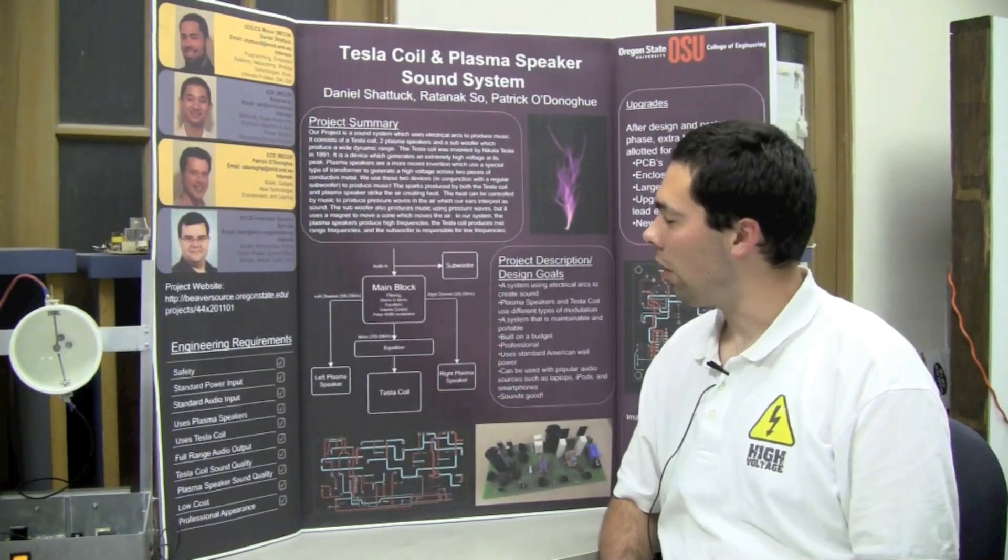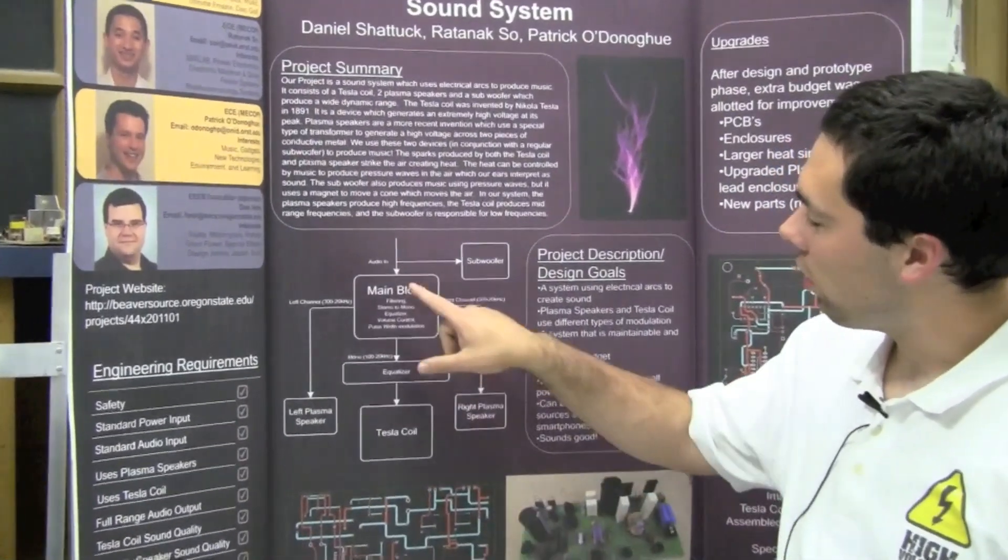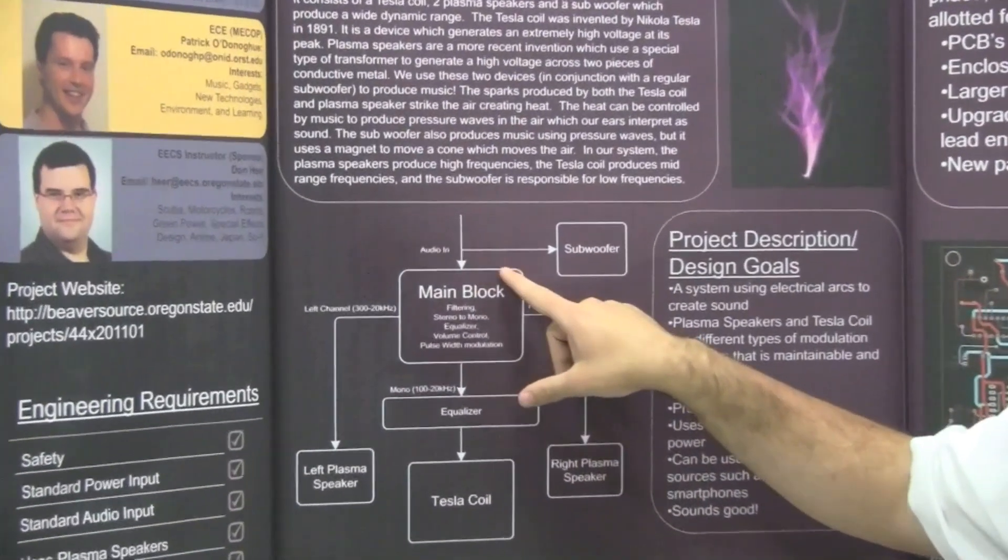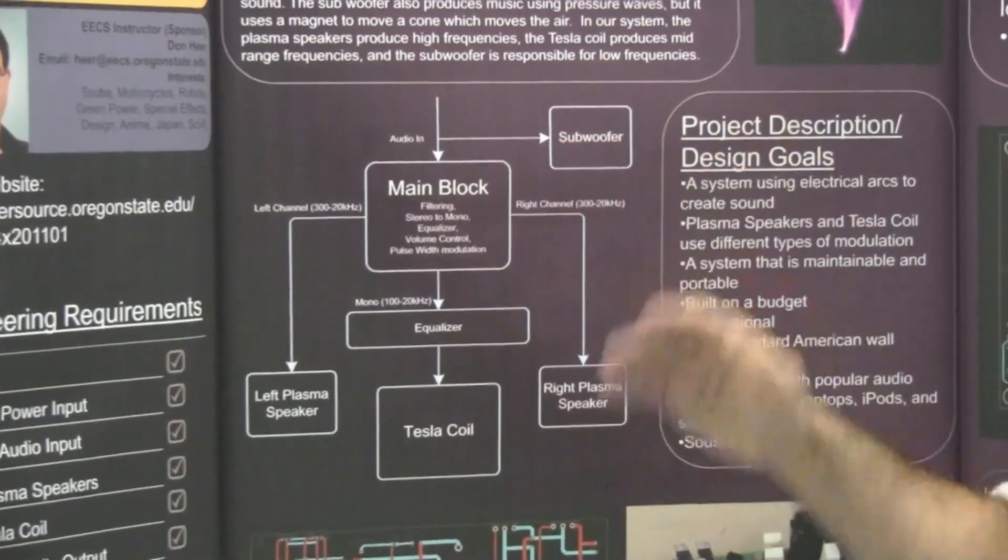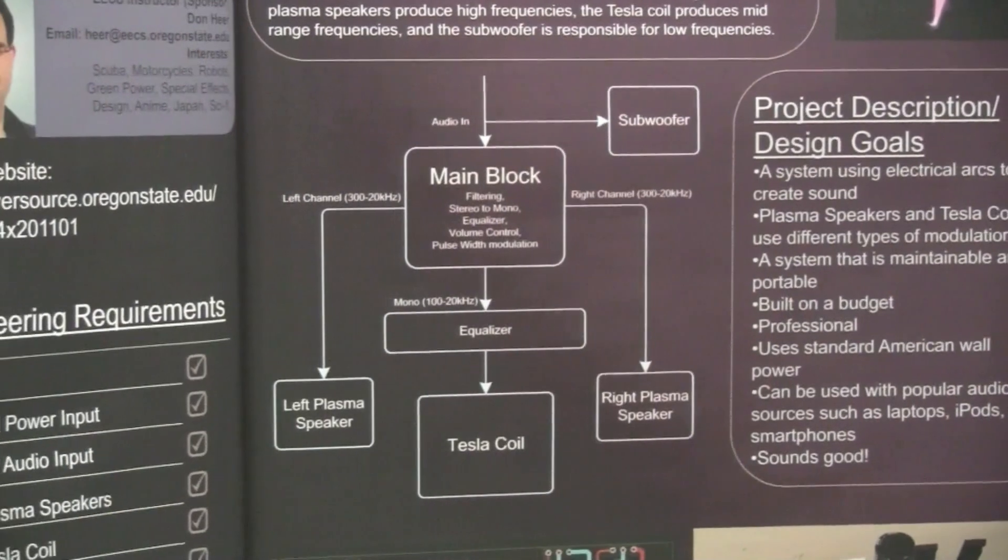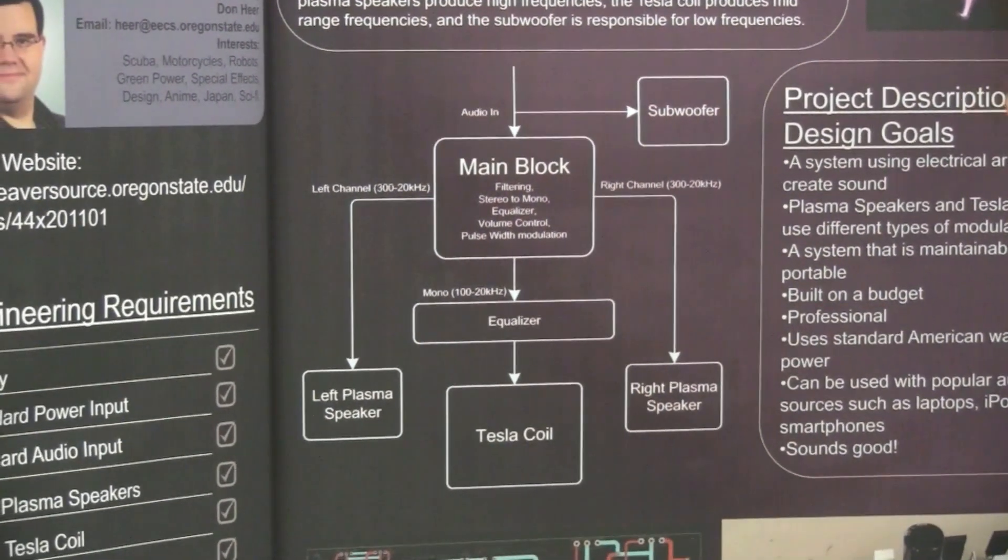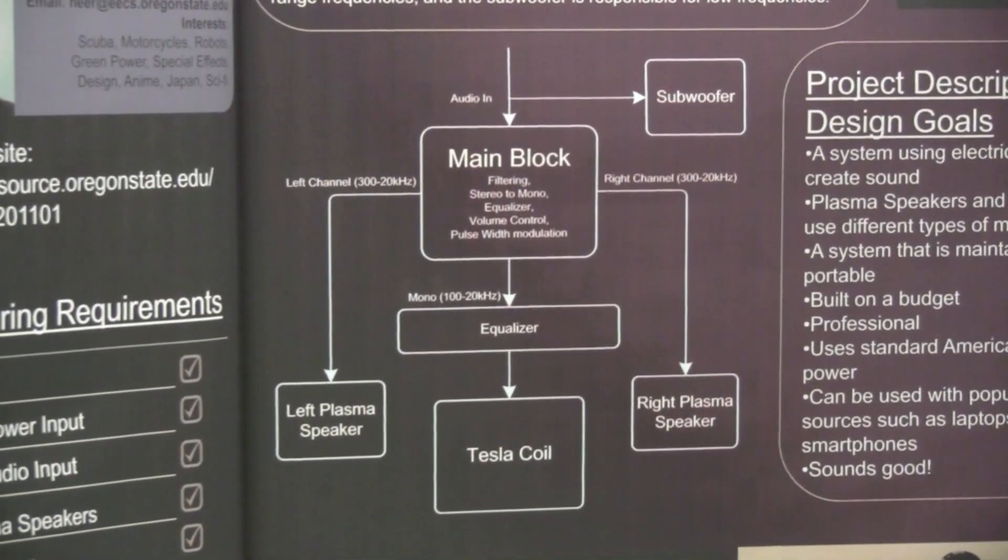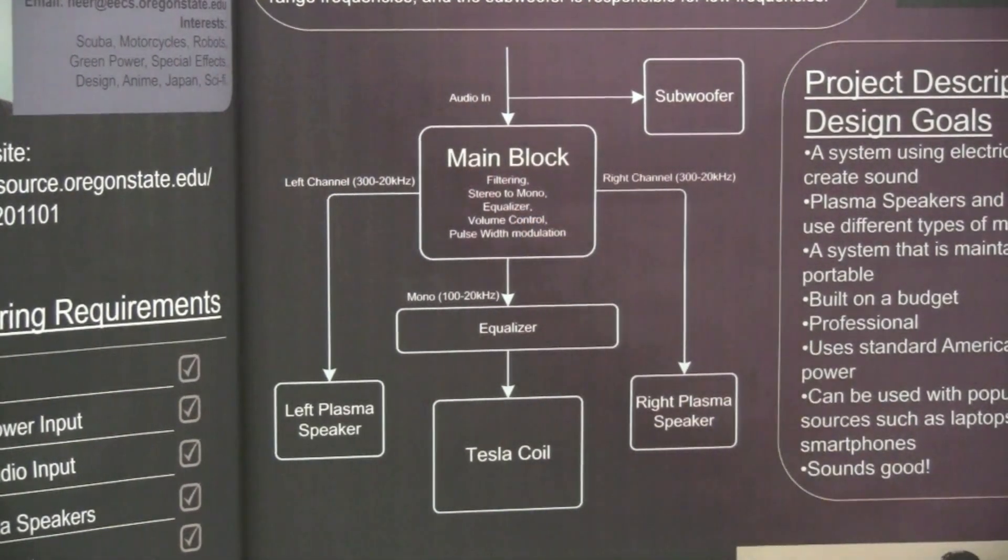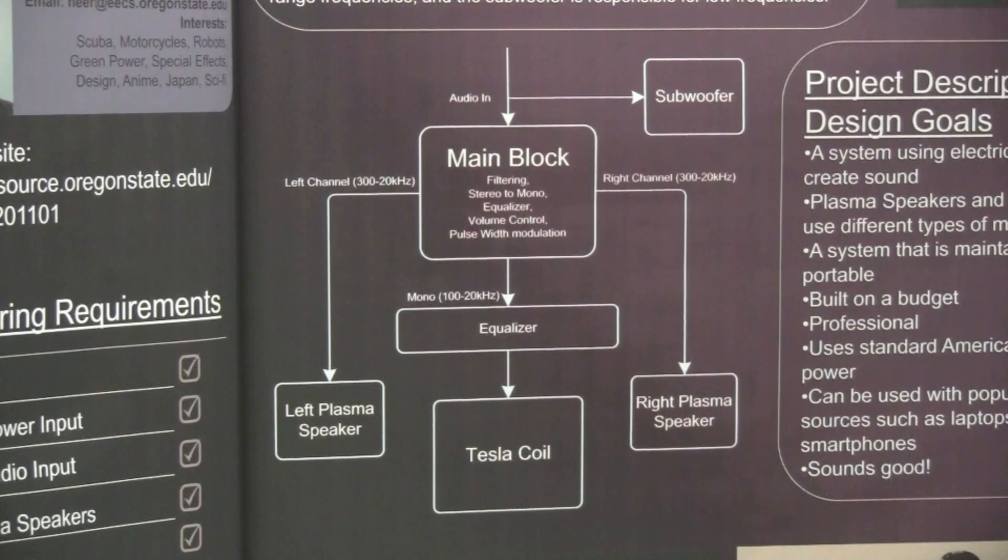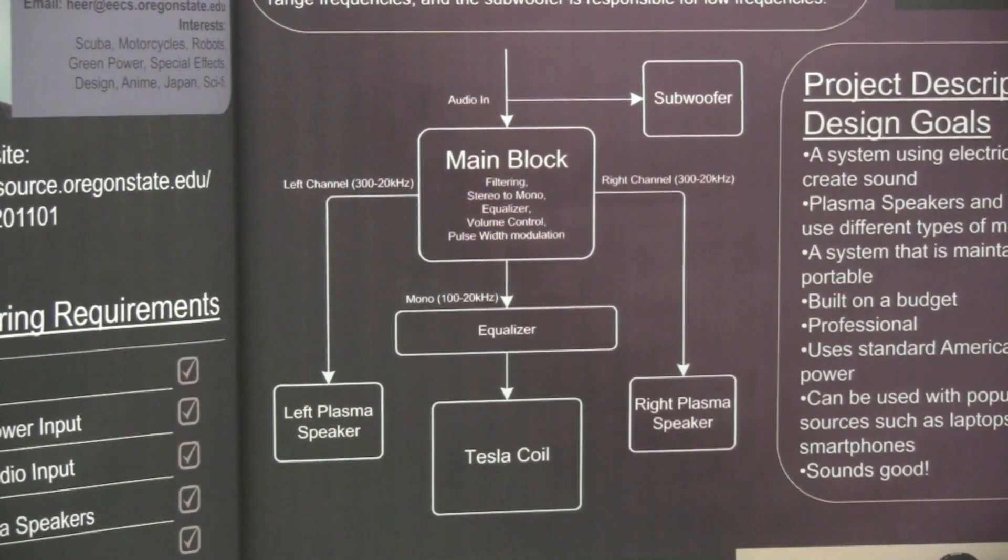So I'm going to give an overview of our system block diagram here. At the top we have our audio input signal coming in, and the first thing that happens is that gets split in two. One side goes over to our subwoofer. The subwoofer was generously donated by Donald here, and that is independently powered and basically independent of our system. The audio also goes into our main block here. This block does quite a few things. It does filtering for the plasma speakers. It does a stereo to mono conversion for the Tesla coil. It also splits off to the equalizer for the Tesla coil. There's volume control for the plasma speakers. And there are two separate pulse width modulation circuits for each plasma speaker.